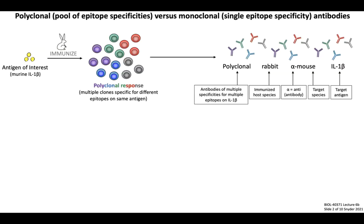The antibody pool that we get from this experiment has a general naming convention we should go over quickly. It's called polyclonal rabbit anti-mouse IL-1-beta, which sounds like a lot but we can break it down. Polyclonal refers to the clonality of the antibody pool. Rabbit refers to the host species used to immunize against our target. The alpha symbol just stands for anti, and this is listed as anti-mouse IL-1-beta because the specificity of the antibody is for mouse IL-1-beta. So if we had used a goat, we would call this polyclonal goat anti-mouse IL-1-beta; if we had used a donkey, it would be polyclonal donkey anti-mouse IL-1-beta, etc.